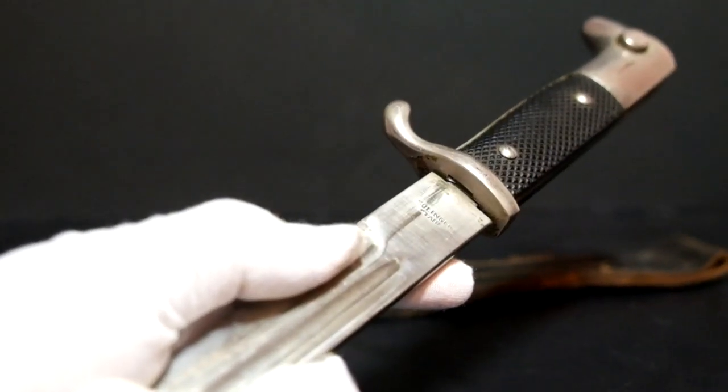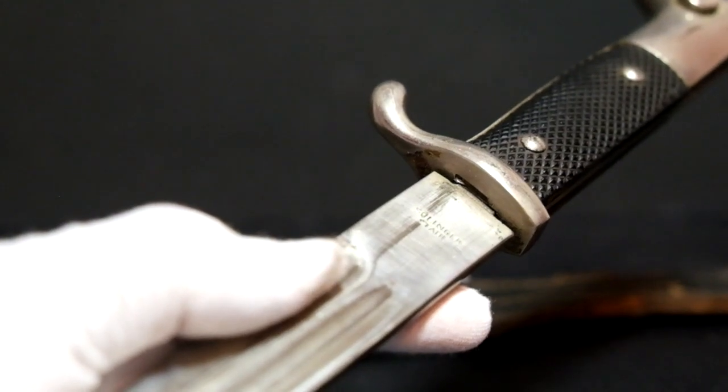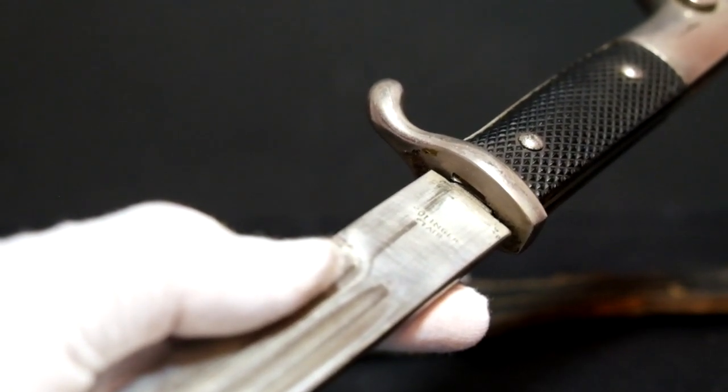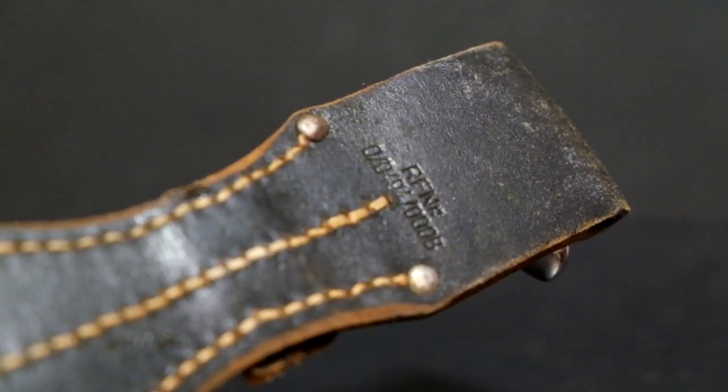Shown here are some markings that read Solingenstahl. Shown in this clip is the bayonet frog's serial number.